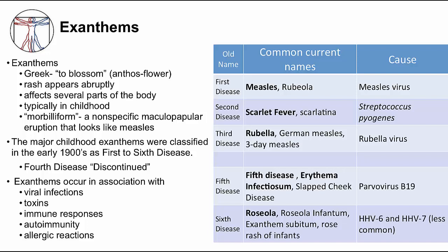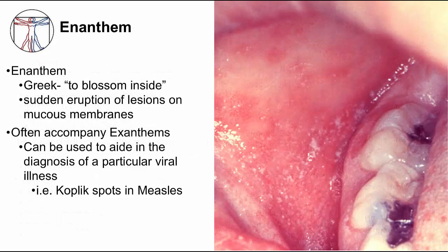Exanthems are a result of virus infections, as we will detail later, but they can also result from bacterial toxins, immune responses, autoimmunity, and even allergic reactions. When people were describing exanthems, they noticed lesions in the mouth and called these enanthems, meaning 'to blossom inside' in Greek. Enanthems represent sudden eruptions of lesions on mucous membranes. Some classic exanthems have associated enanthems — for example, Koplik spots associated with measles. The arrow points to the whitish lesions on the buccal mucosa.